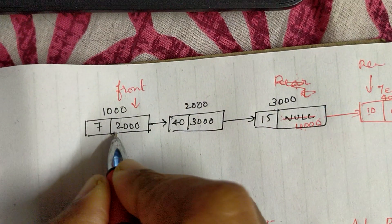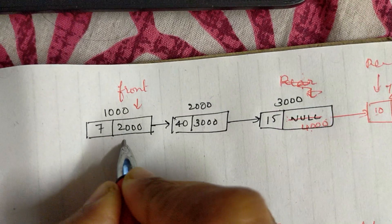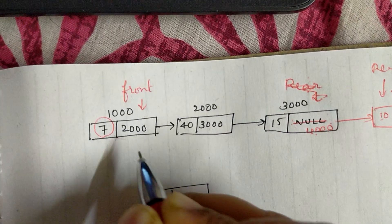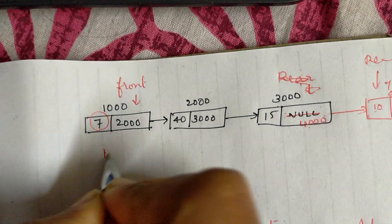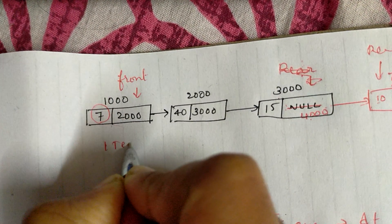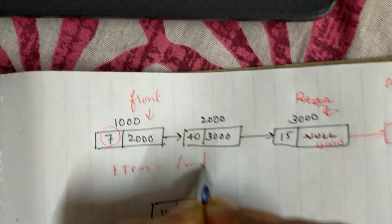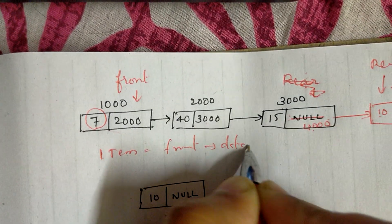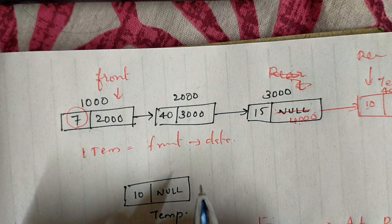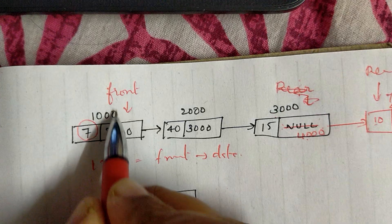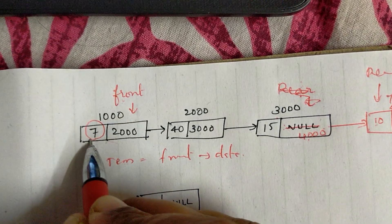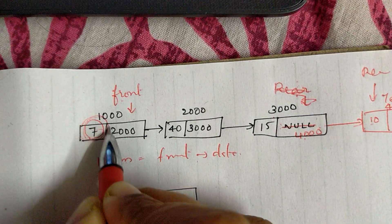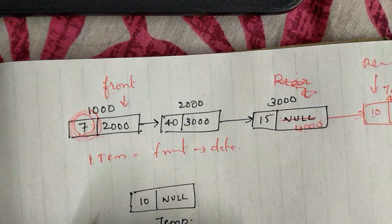In the linked list, this is the deletion. We assign the item to the node's data field. The node is the part to be deleted.